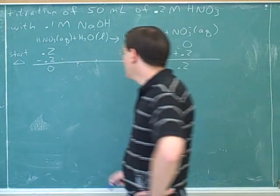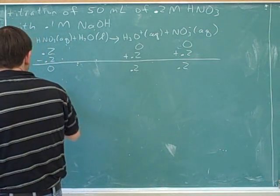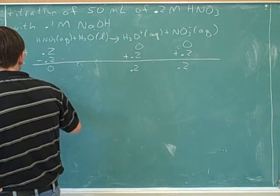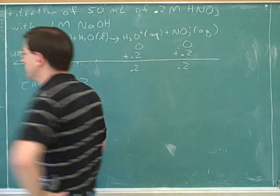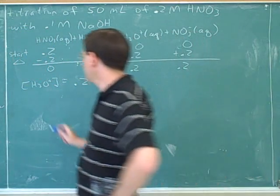And this is giving us our pH. Now we want to figure out what the pH is. First of all, what is our hydronium concentration going to be? It's going to be 0.2. And now we want to try to figure out the pH.